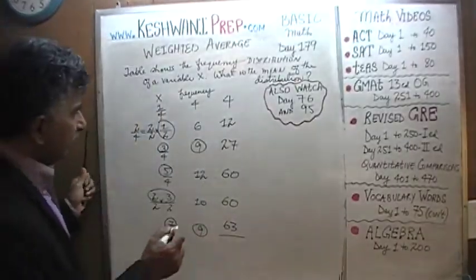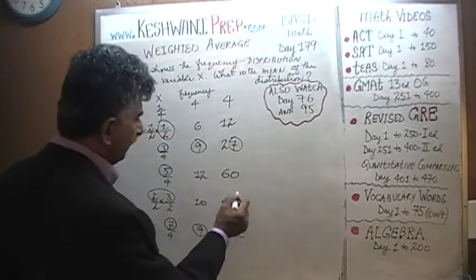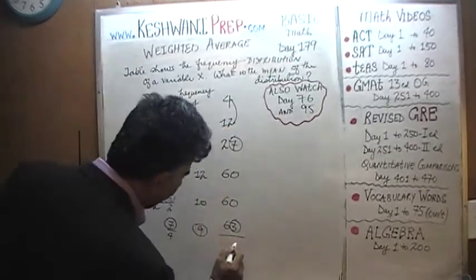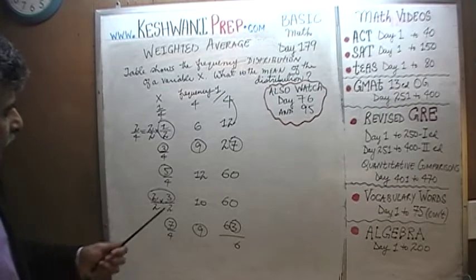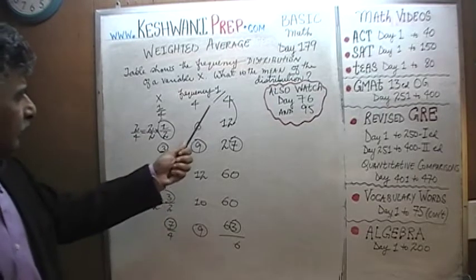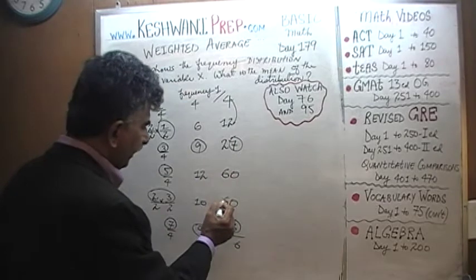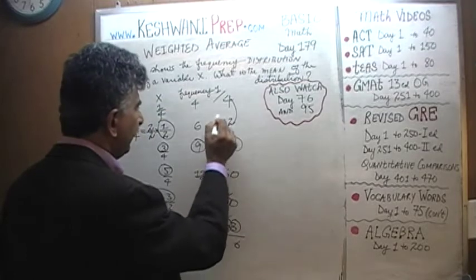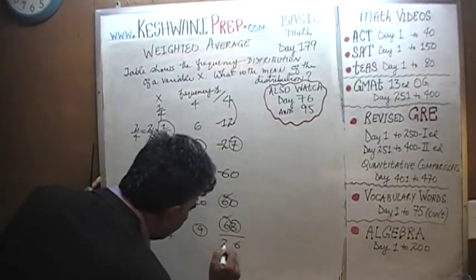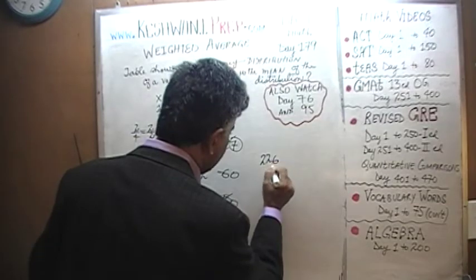Let's set it up. Adding up the quarters: 4 plus 12 is 16, plus 27 is 43, plus 60 is 103, plus 60 is 163, plus 63 is 226 quarters total. So we have 226 quarters. We convert these into dollars by dividing by 4.